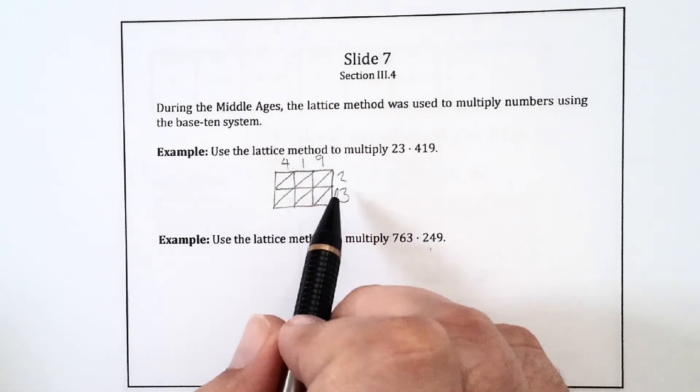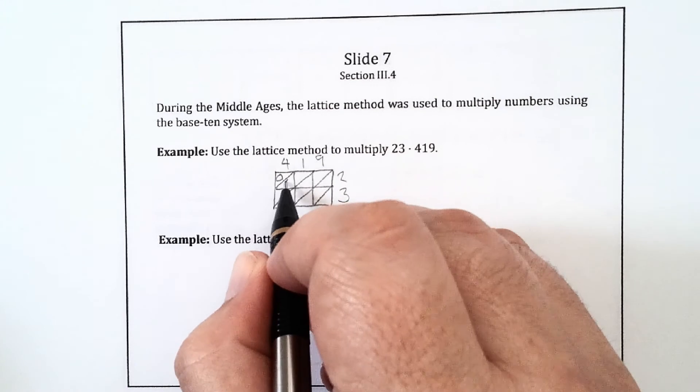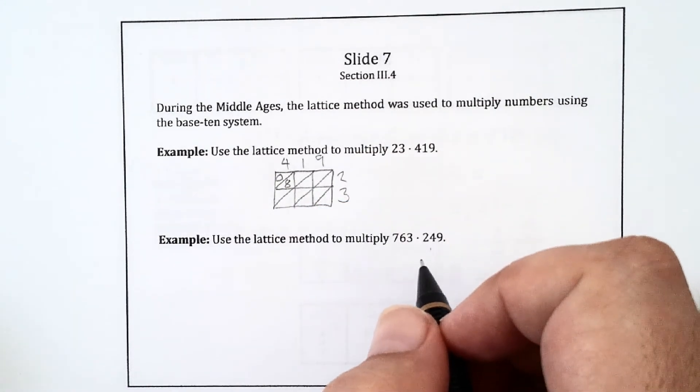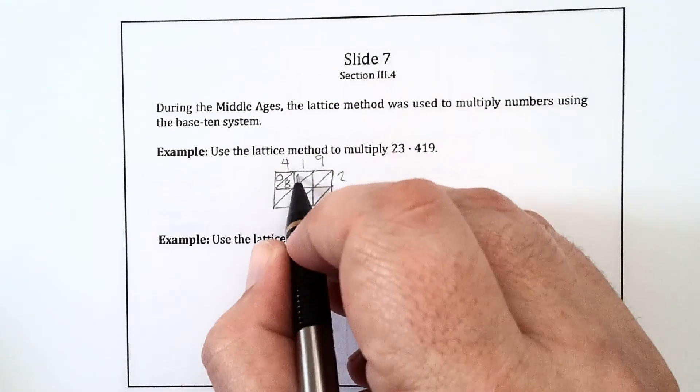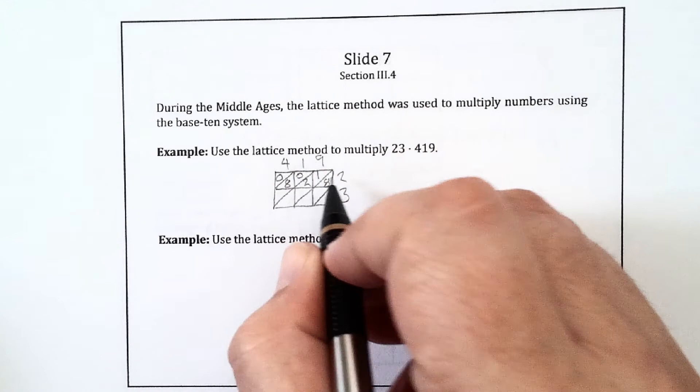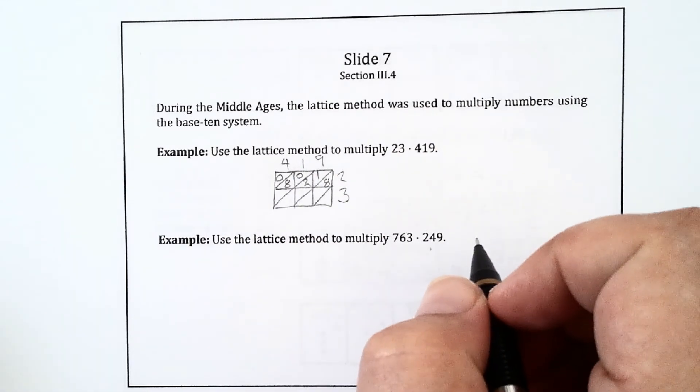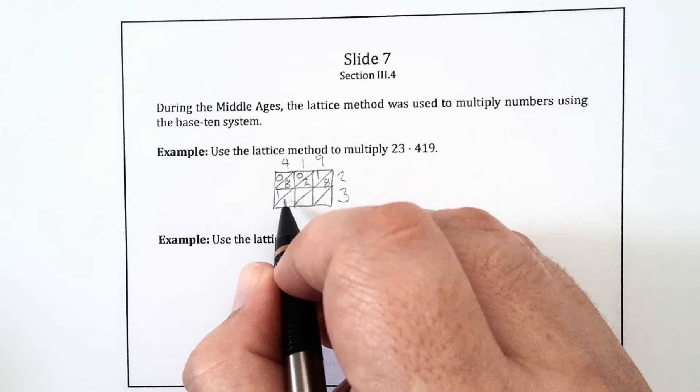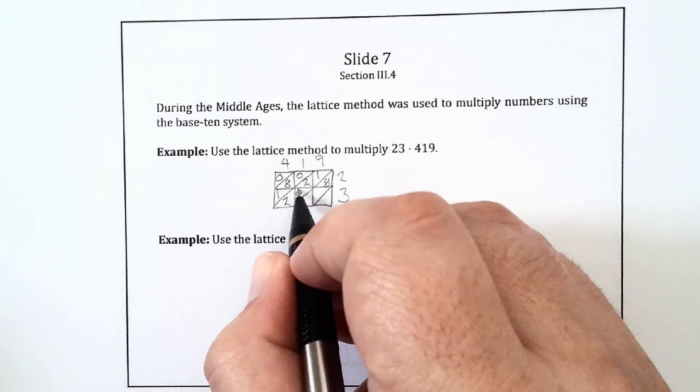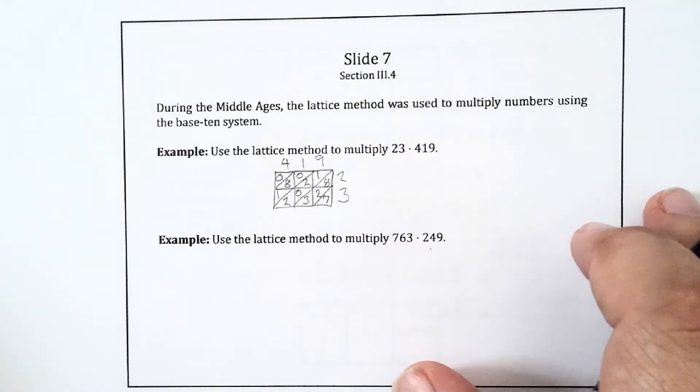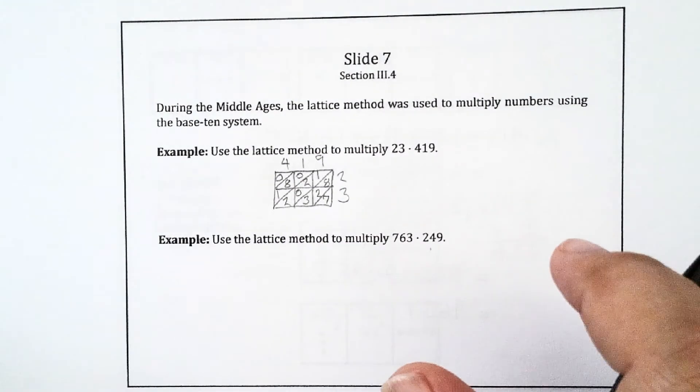So when I do 4 times 2, I get 8. I'll just put a 0, 8 there. And then 1 times 2 is 2, so I put a 0, 2. 9 times 2 is 18, so there's 1, 8. 4 times 3 is 12, so 1, 2. 1 times 3 is 3. 9 times 3 is 27. So I fill in the box like that with the six products.